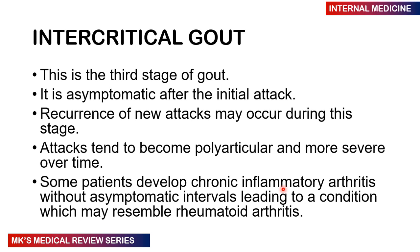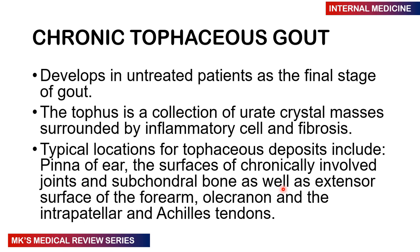If the patient is not treated, they progress to chronic tophaceous gout — the end stage of the condition. Patients develop collections of uric acid crystals known as tophi (singular: tophus), surrounded by inflammatory cells and fibrosis. Tophaceous deposits can be seen in the pinnae of the ears, surfaces of chronically involved joints, subchondral bones, extensor surfaces of the forearm, the olecranon, and the infrapatellar and Achilles tendons.